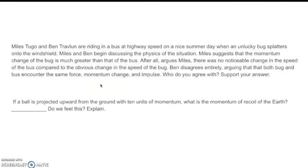Miles and Ben are riding in a bus at highway speed on a nice summer day when an unlucky bug splatters upon the windshield. Miles and Ben begin discussing the physics of the situation. Miles suggests that the momentum change of the bug is much greater than that of the bus. After all, argues Miles, there are no noticeable change in the speed of the bus compared to the obvious change in the speed of the bug. Ben disagrees entirely, arguing that both the bug and the bus encounter the same force, momentum change, and impulse. Who do you agree with and support your answer?